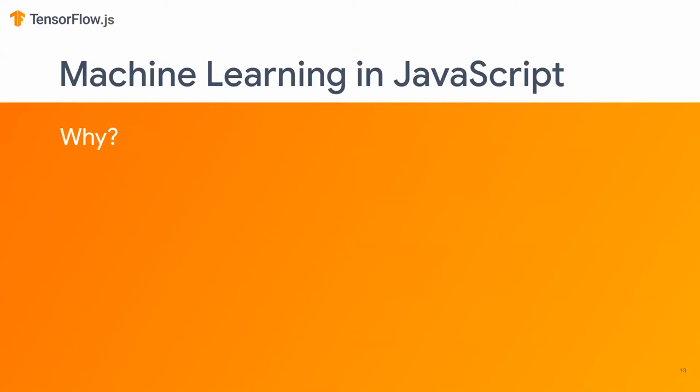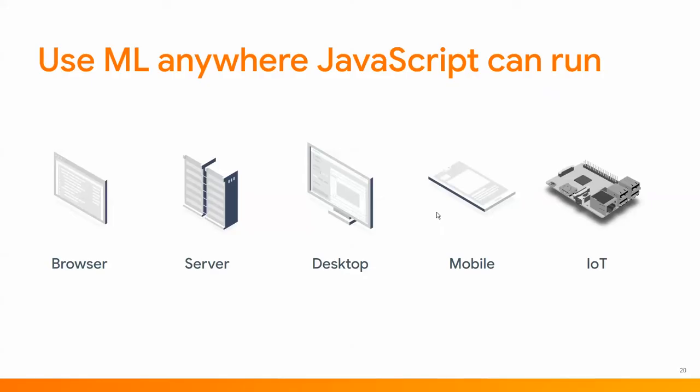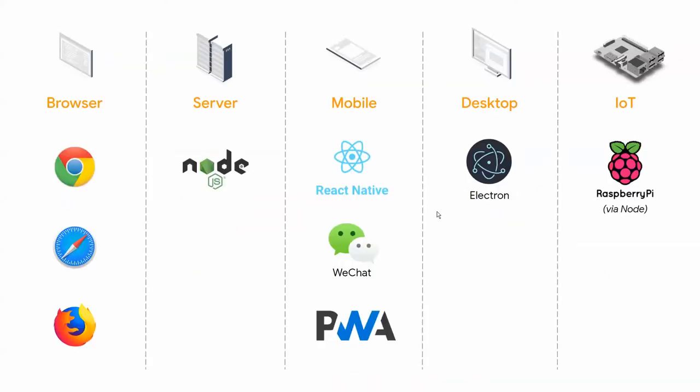Why would you want to do machine learning in JavaScript? JavaScript can run pretty much everywhere: in the web browser, on the server side, desktop, mobile, and even Internet of Things. You can see many technologies you already know — popular web browsers, Node.js on the server side, React Native and WeChat for mobile, Electron for native desktop applications, and Raspberry Pi for IoT. JavaScript is the only language that can be used across all of these devices with ease, without any extra add-ons and plug-ins.